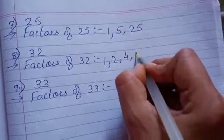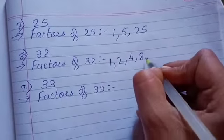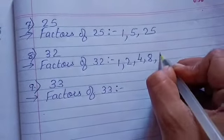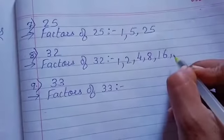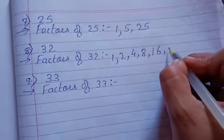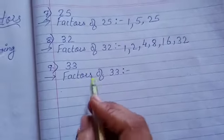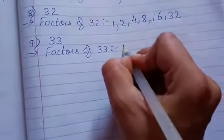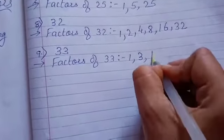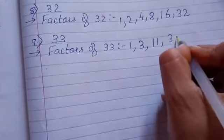Same way, for 32: 1, 2, 4, 8, 16, and itself 32. Same way, factors of 33: 1, 3, 11, and 33.